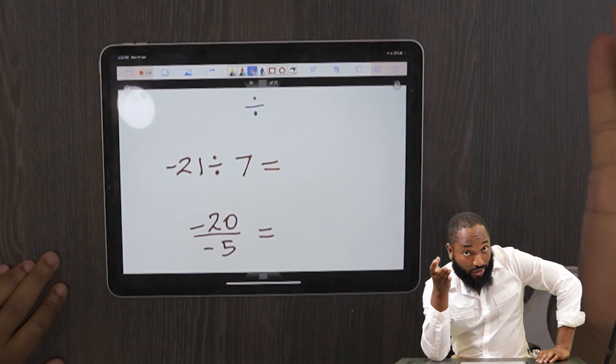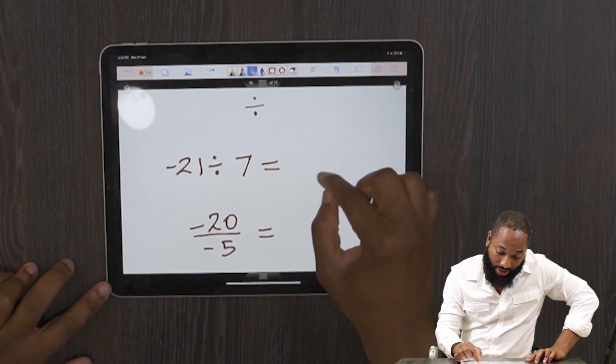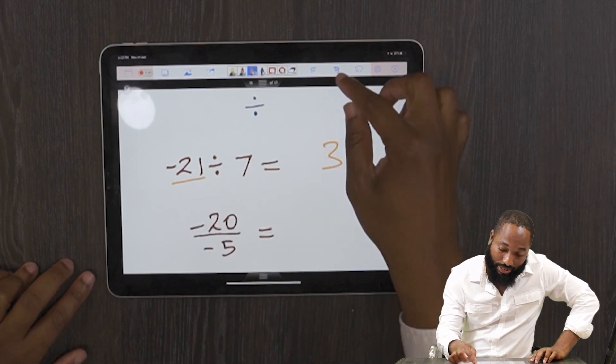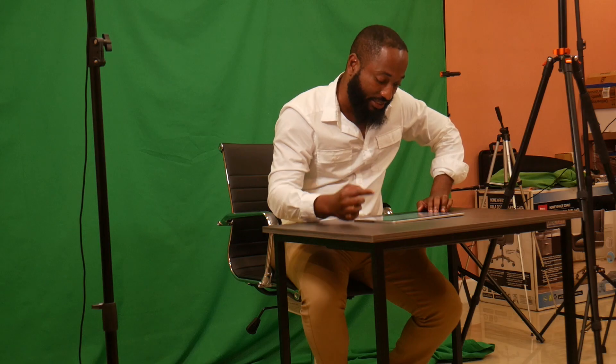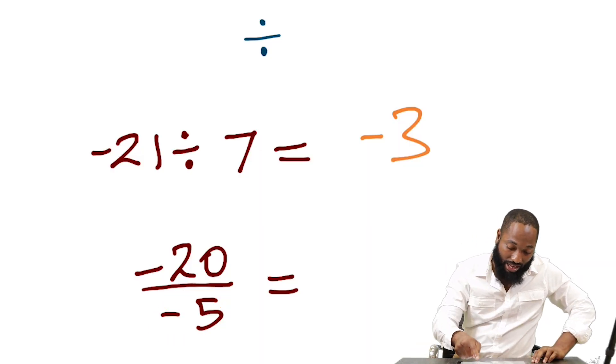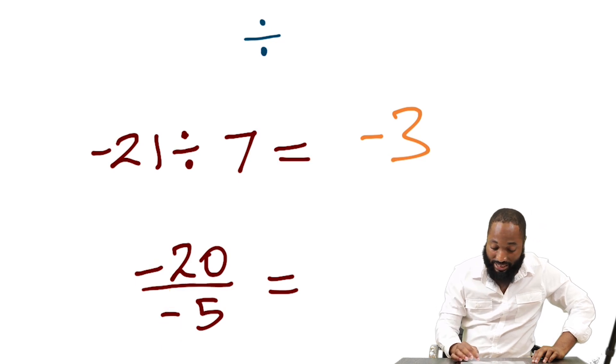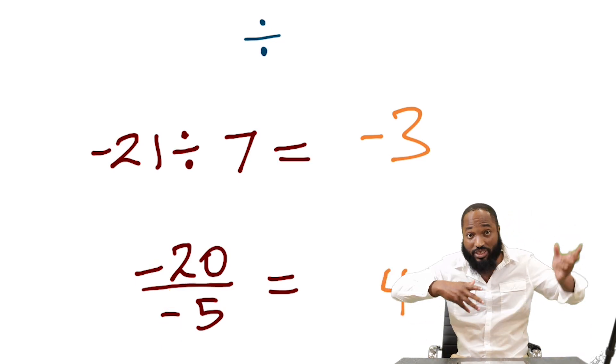So it also works for division. Negative 21 divided by 7 is 3. But because one of the numbers is negative and one is positive, it's negative 3. Negative 20 divided by negative 5, it's like a fraction. But because both of the numbers are negative, the answer is actually just 4, positive 4.